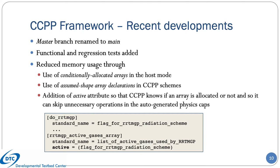There have also been recent advancements in the CCPP framework. Our primary branch was renamed from master to main to conform with anti-racism practices. We added functional and regression tests to ascertain code integrity during the development process, and we reduced memory usage through the use of conditionally allocated arrays on the host side, assumed shape array declarations in CCPP schemes, and the addition of a new active attribute to CCPP quantities, which lets the CCPP know if an array is allocated or not to skip unnecessary operations in the auto-generated physics caps.